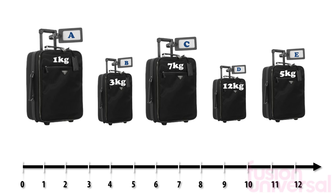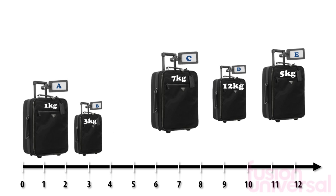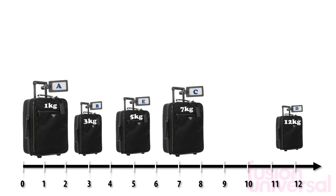Here is a number line to help us. We can arrange them now in ascending order of weight. You can see they are no longer in order of size. When you compare numbers and order them, you can use a number line to help you.